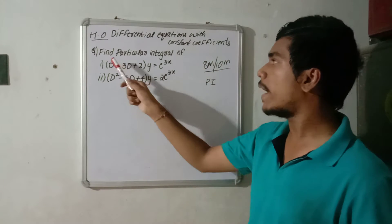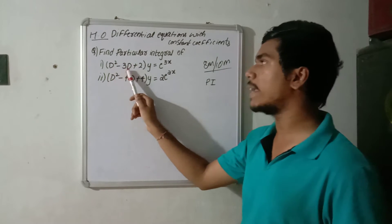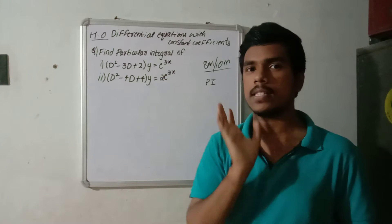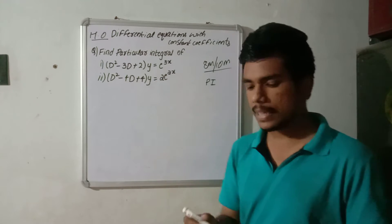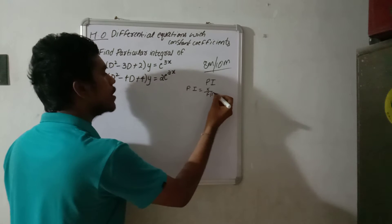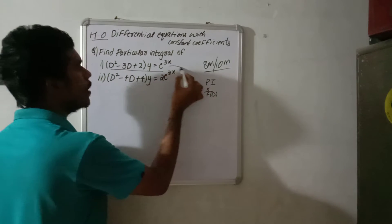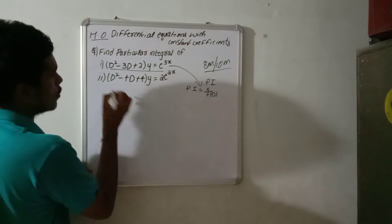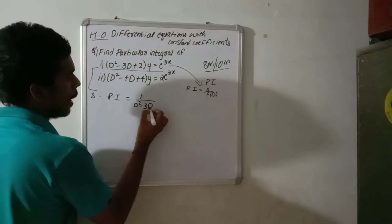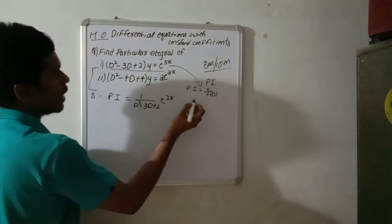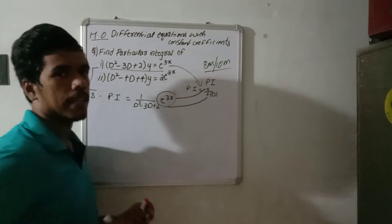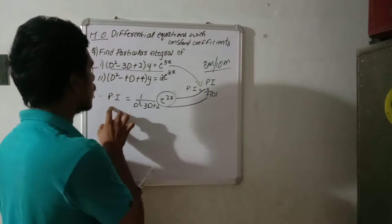Now we get two questions. Find the particular integral of (D² - 3D + 2)y = e^(3x). So we use the formula: particular integral PI is equal to X(D) by f(D). So PI is equal to 1 by (D² - 3D + 2) into e^(3x). This is the formula where X(D) is e^(3x).